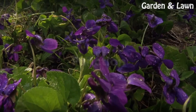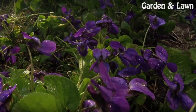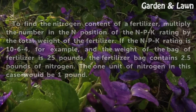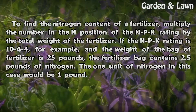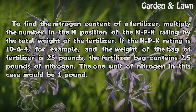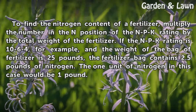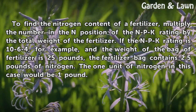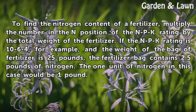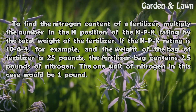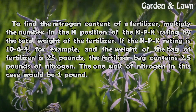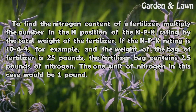Function. To find the nitrogen content of a fertilizer, multiply the number in the N position of the NPK rating by the total weight of the fertilizer.